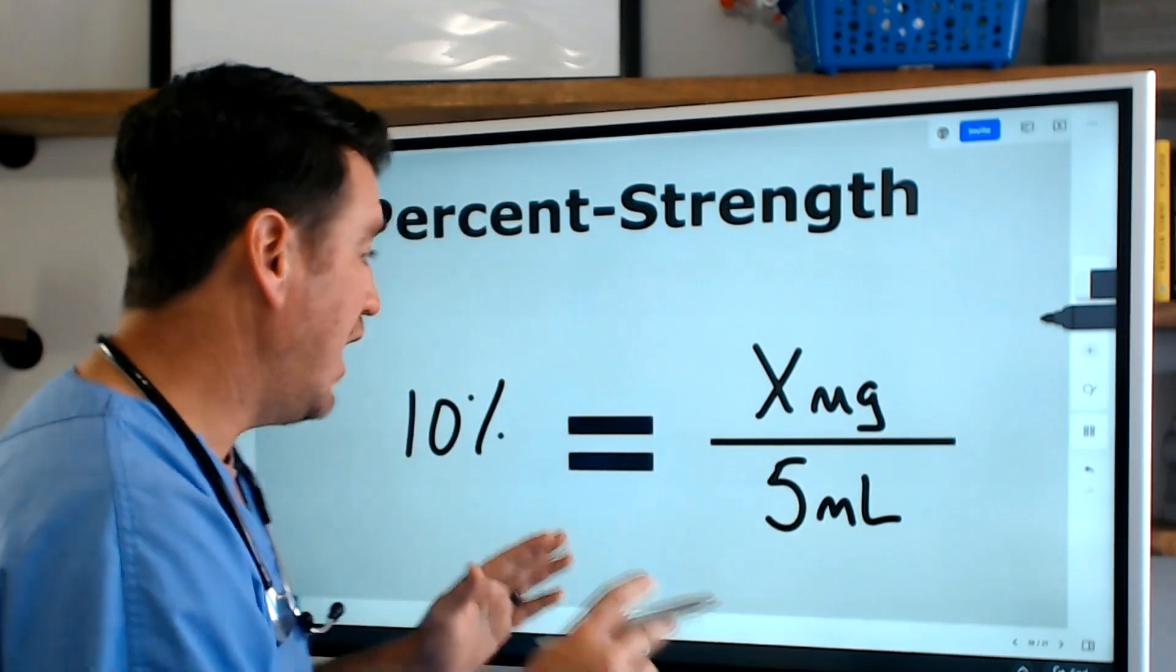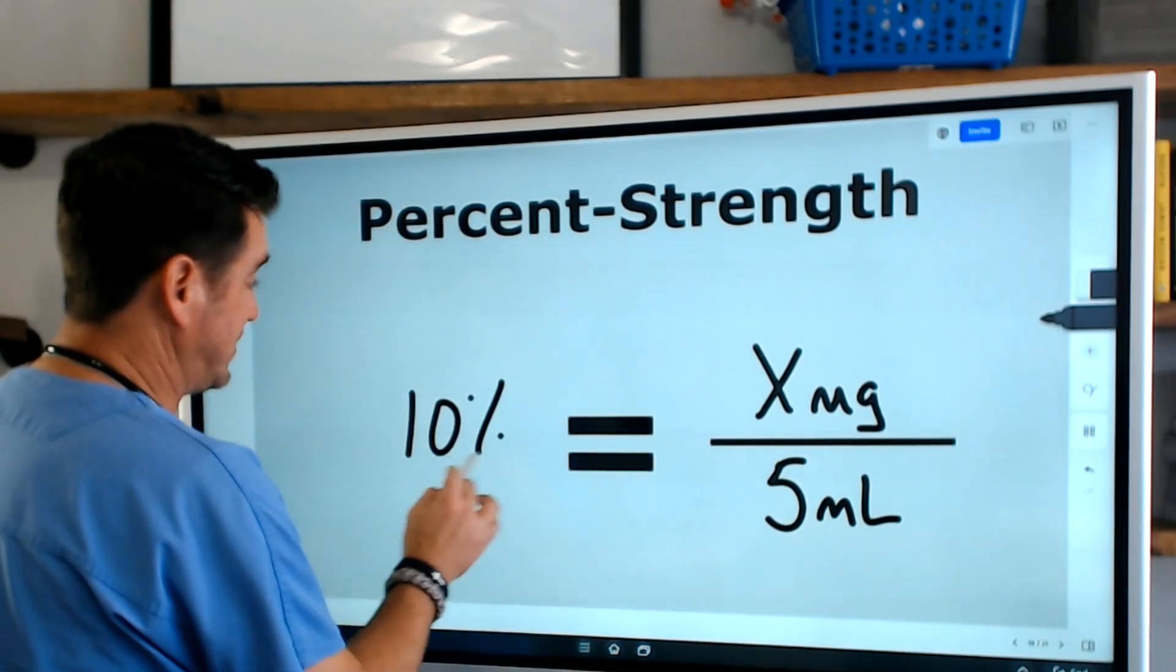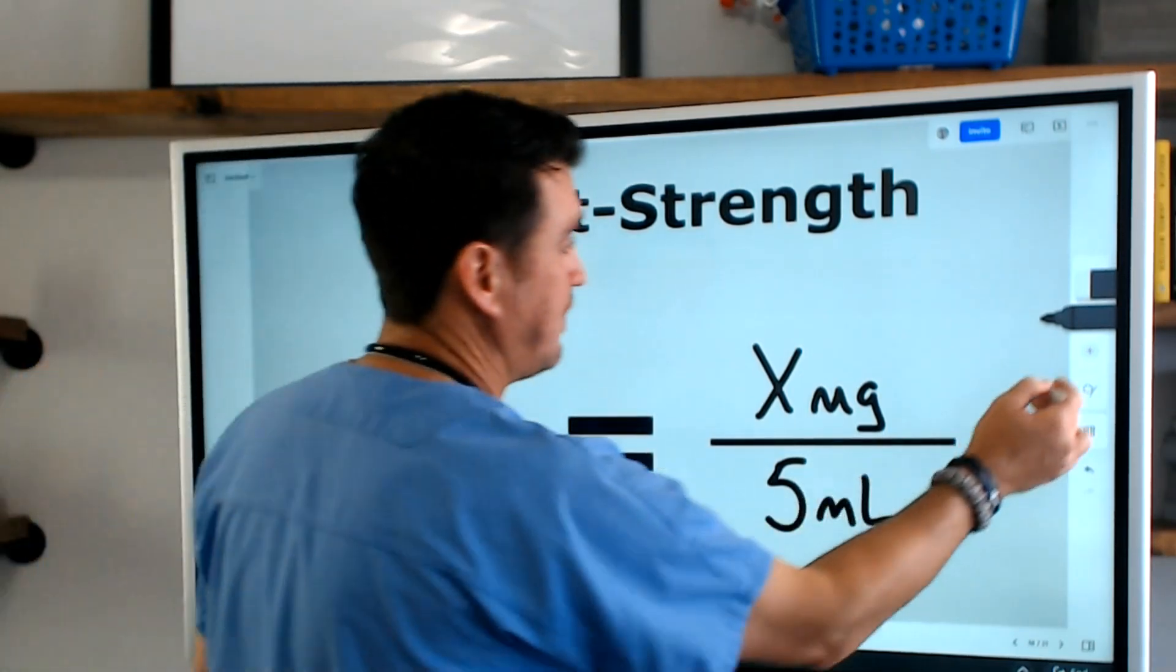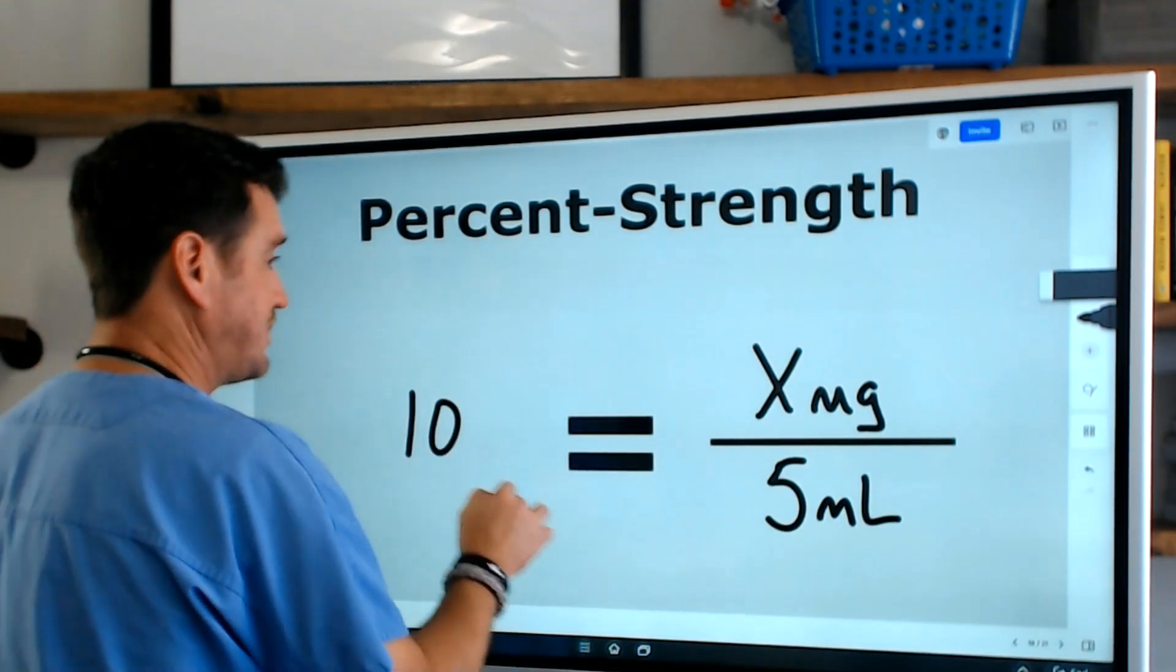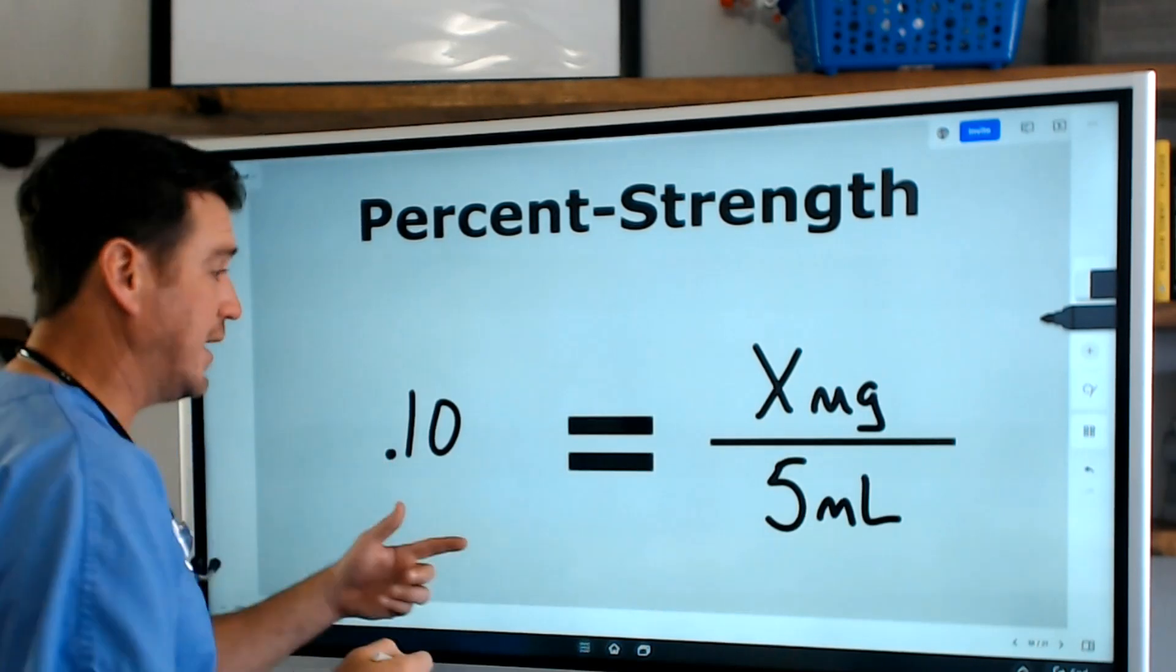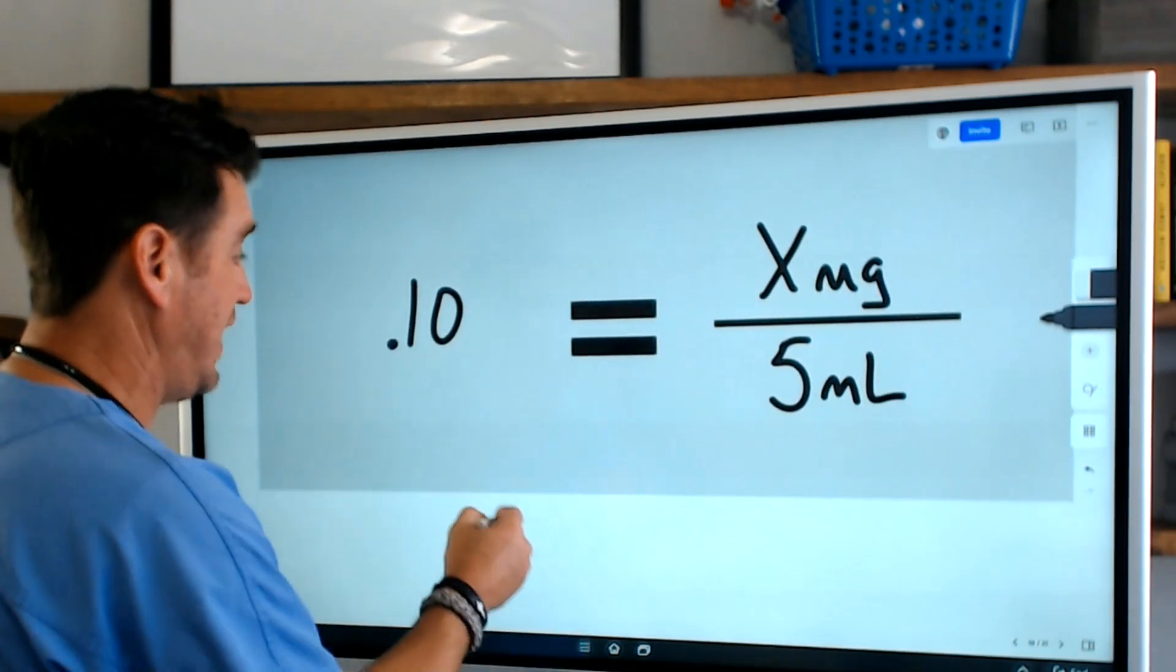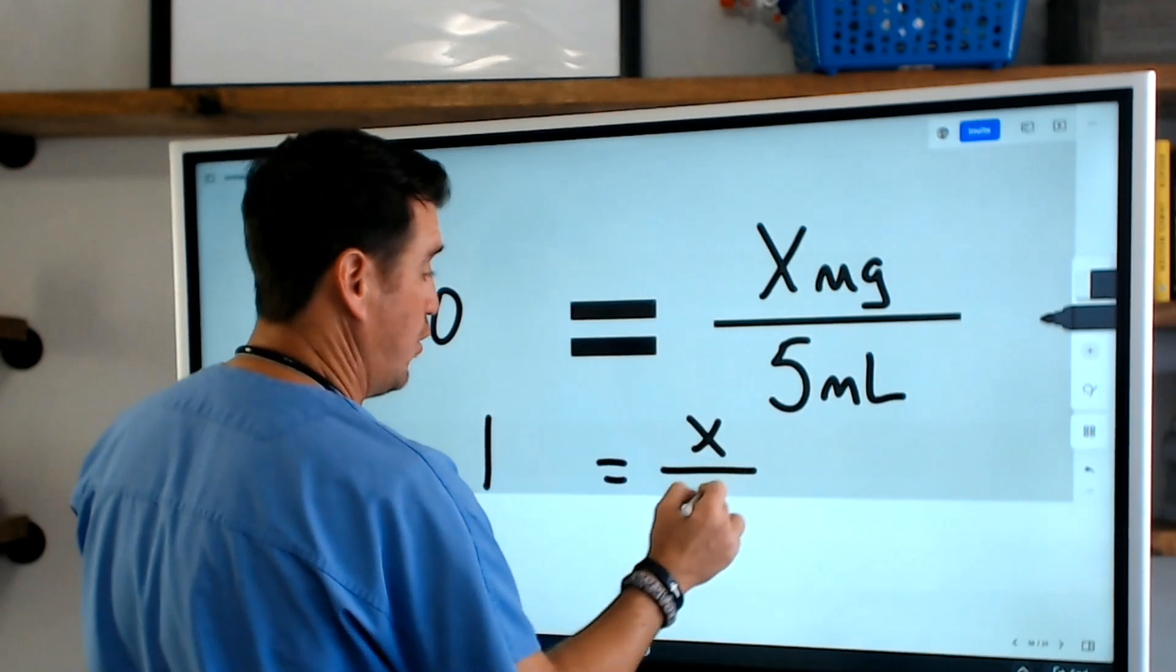Now the other thing you have to remember when doing this formula is that this percentage needs to be changed into a decimal. So we simply turn this into a decimal. 10 percent is 0.1 equals x over 5 milliliters. So now we just solve for x. We're going to go 0.1 equals x over 5.